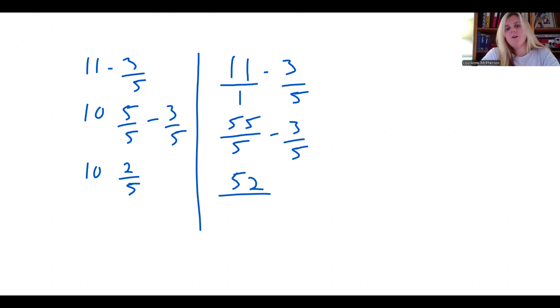Now what we have is called an improper fraction. And what that means is you have more than one. And you know this because your top number is greater than your bottom number. In order to convert your improper fraction back into a mixed number, you're going to divide the bottom number into the top and take it to the first remainder.